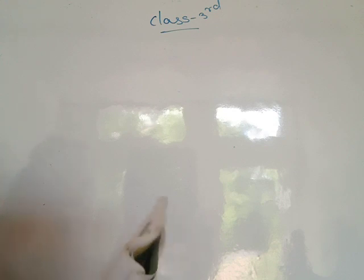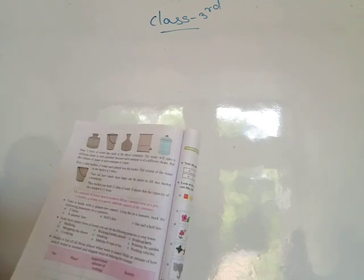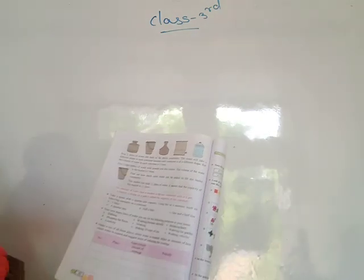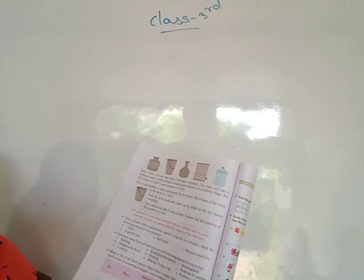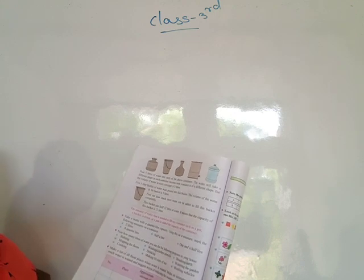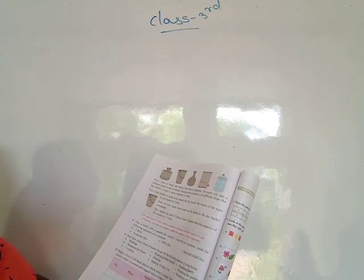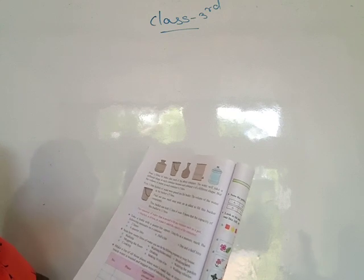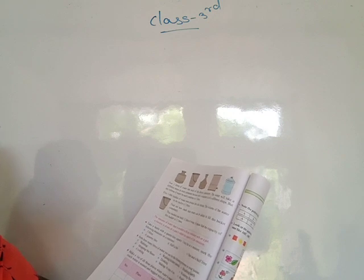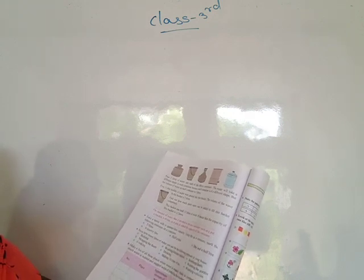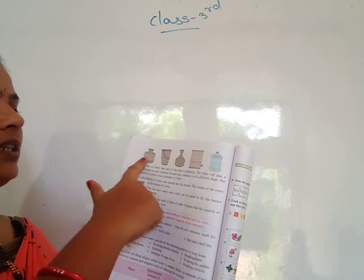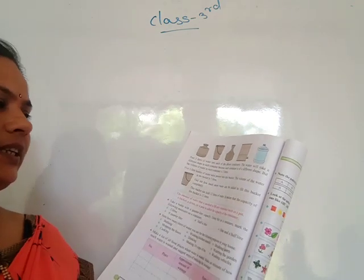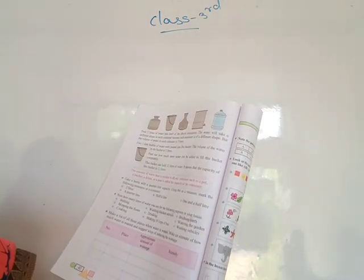See page number 42. Here you see different types of vessels. Pour three liters of water into each of these containers. The water will take a different shape in each container because each container has a different shape, but the volume of water in each container is only three liters.